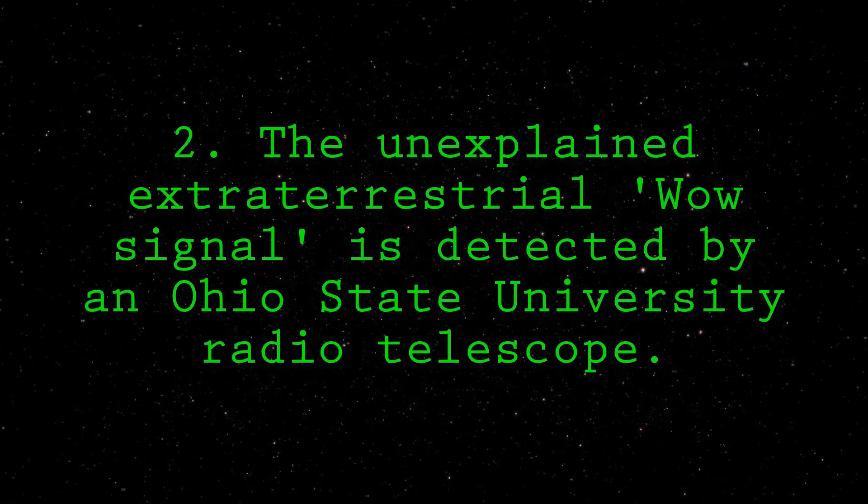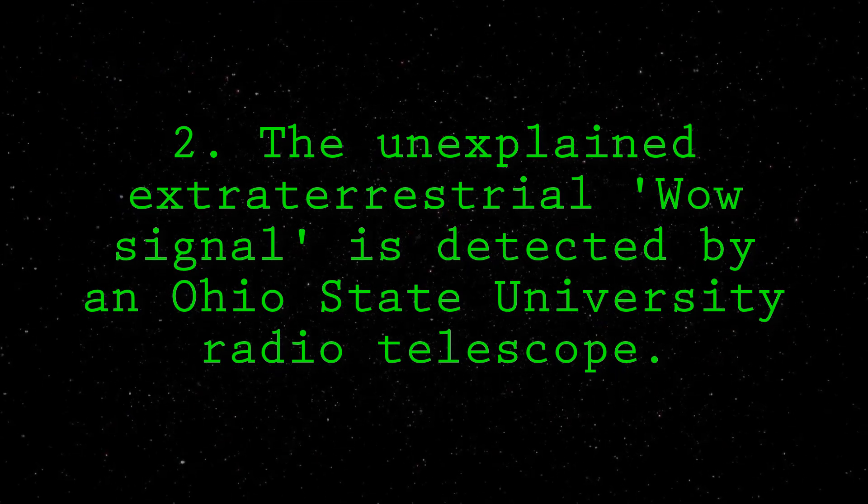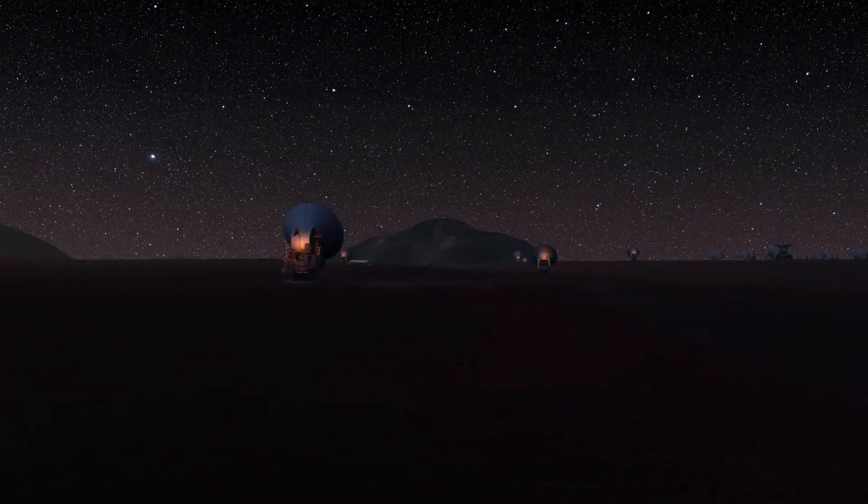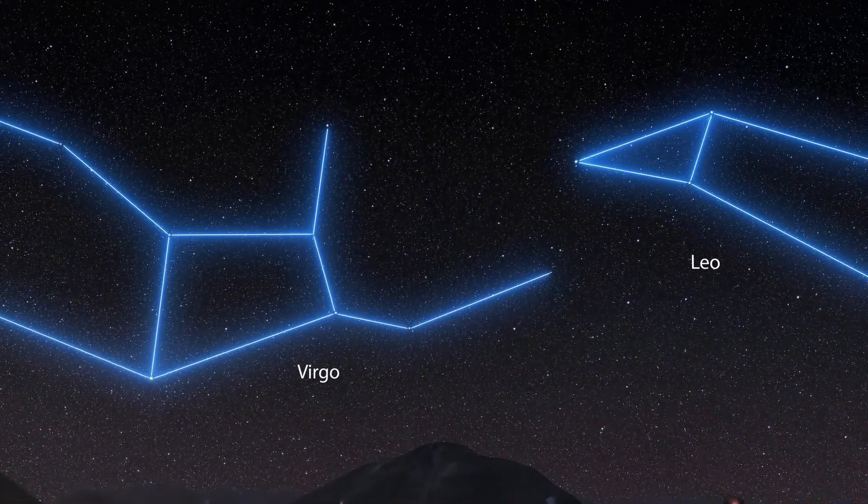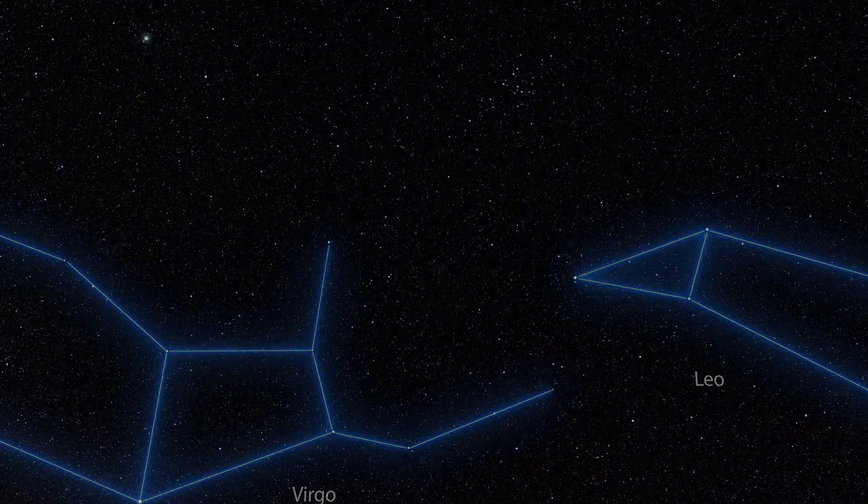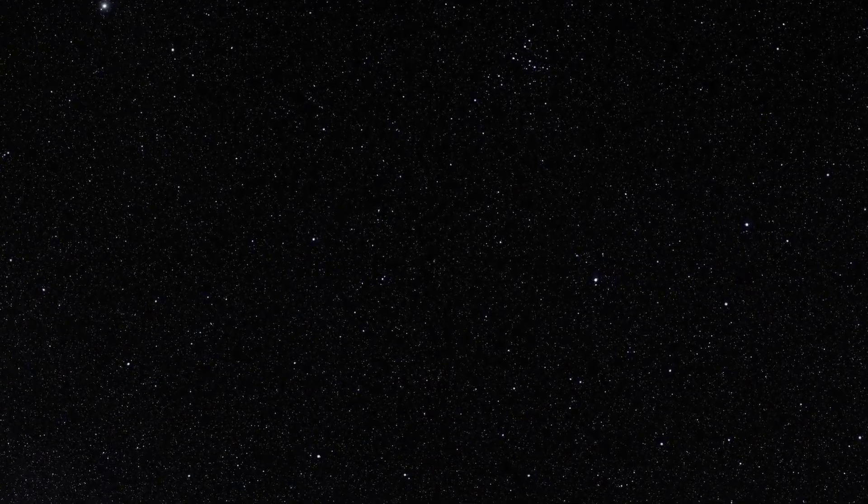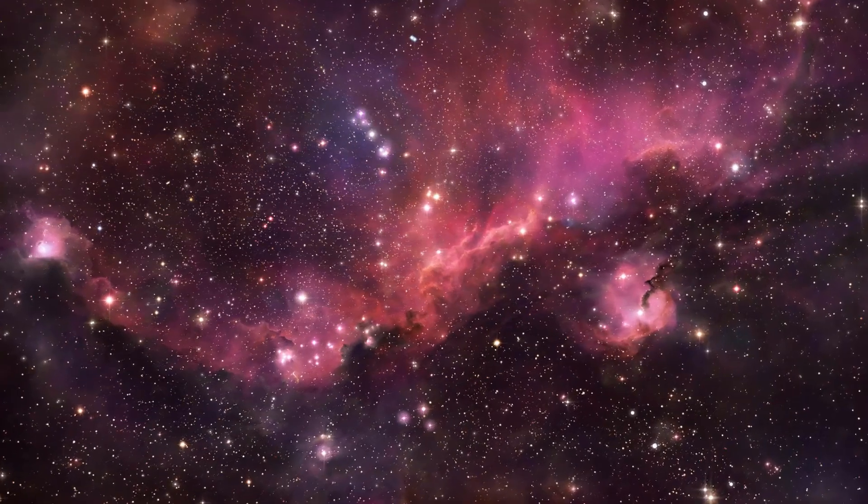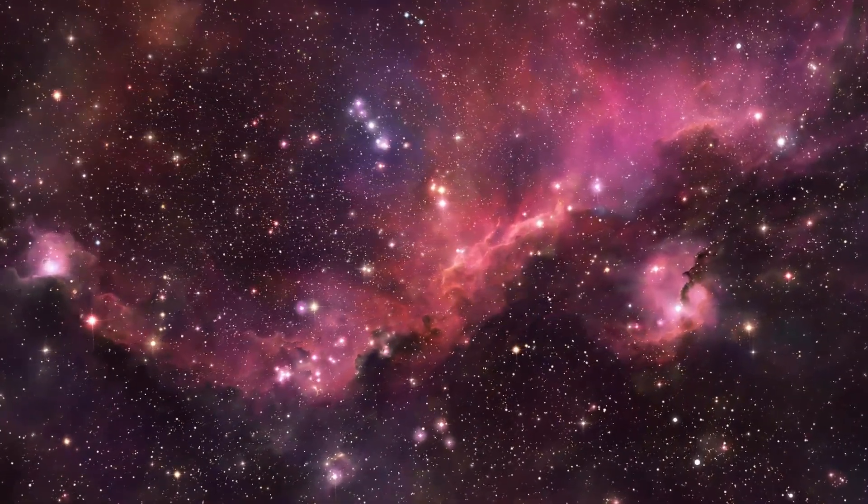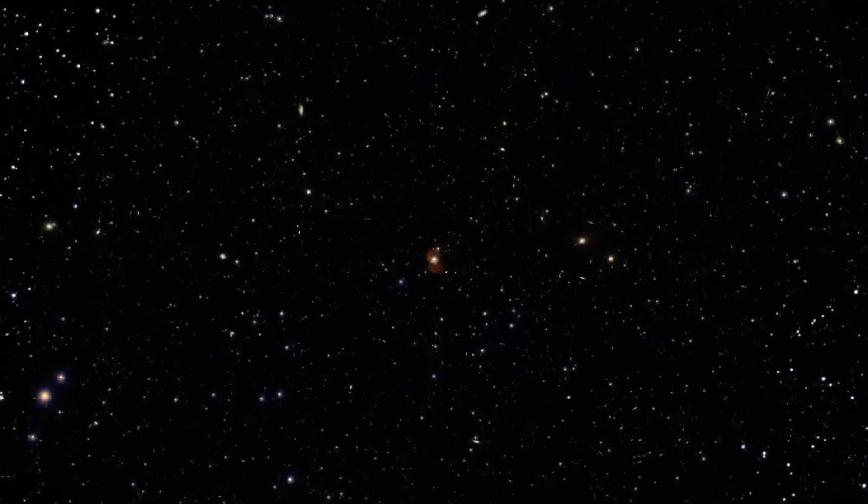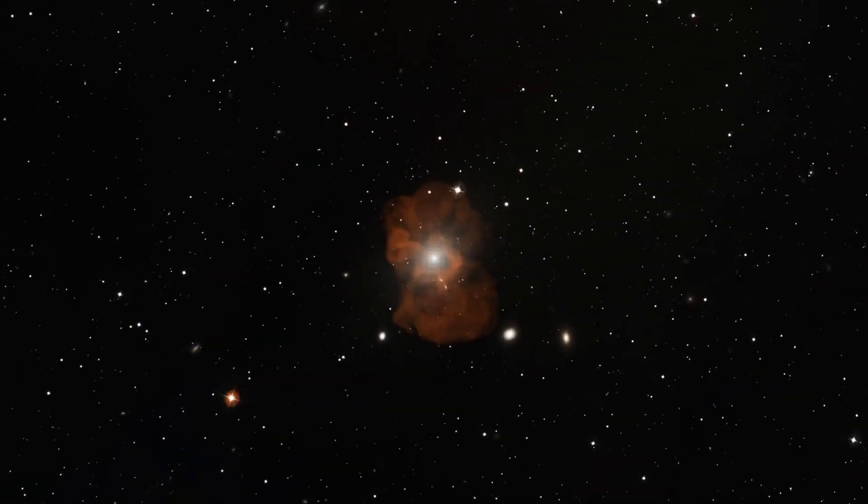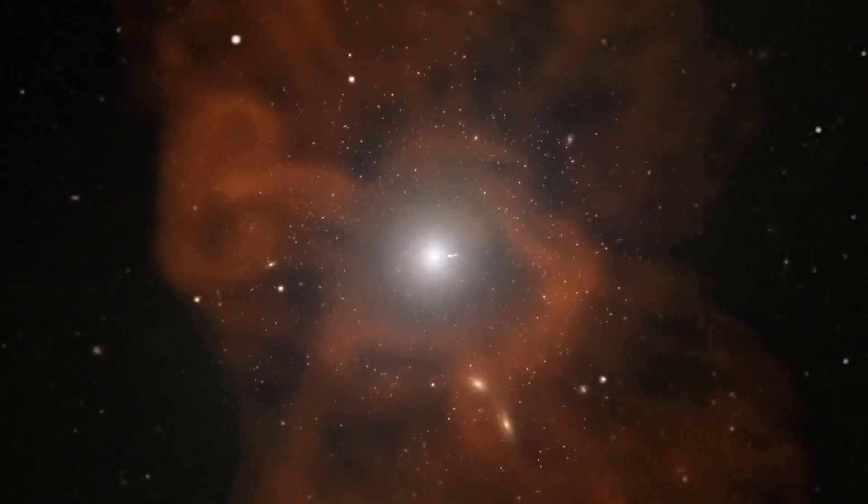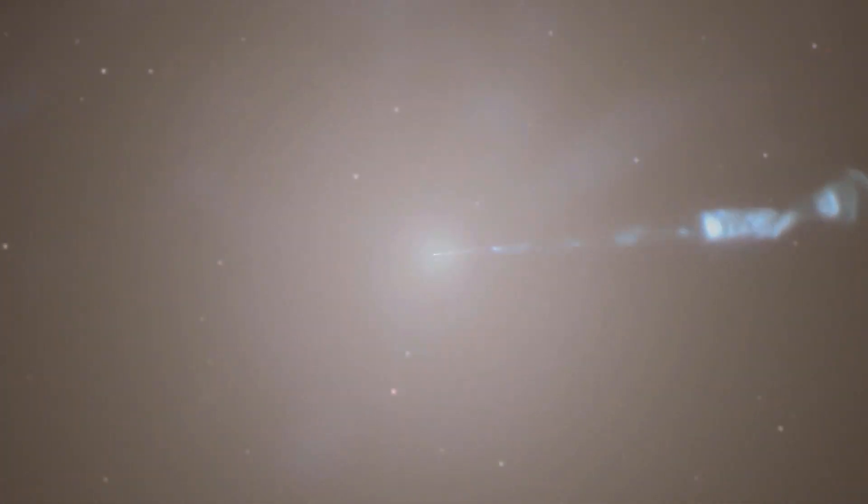Number 2. The unexplained extraterrestrial WOW signal is detected by an Ohio State University radio telescope. In August 1977, an Ohio State University radio telescope detected an unusual pulse of radiation from somewhere near the constellation Sagittarius. The 37-second-long signal was so startling that an astronomer monitoring the data wrote WOW on the telescope's printout. The signal was within the band of radio frequencies where transmissions are internationally banned on Earth. Furthermore, natural sources of radiation from space usually cover a wider range of frequencies. As the nearest star in that direction is 220 million light-years away, either a massive astronomical event or intelligent aliens with a very powerful transmitter would have had to have created it. The signal still remains unexplained.